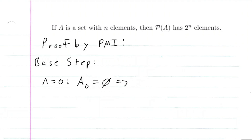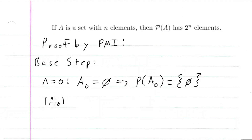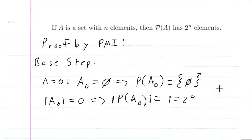So this implies that the power set of A sub zero is equal to the set containing the empty set. We have that the cardinality of A sub zero is equal to zero, and this implies that the cardinality of the power set of A sub zero is equal to one, which is equal to two to the zero. Because if A has zero elements, we want to show that the cardinality of the power set of A would have two to the zero elements — and we've done that here.